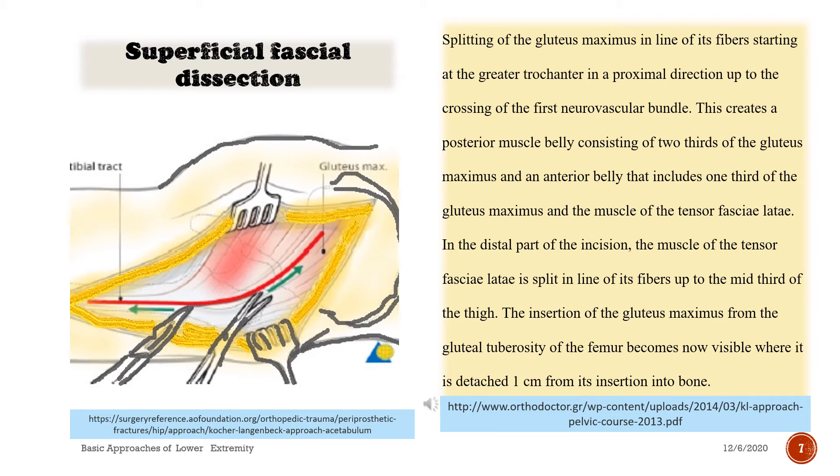In the distal part of the incision, the muscle of the tensor fasciae latae is split in line of its fibers up to the mid-third of the thigh. The insertion of the gluteus maximus from the gluteal tuberosity of the femur becomes visible where it is detached one centimeter from its insertion into bone.